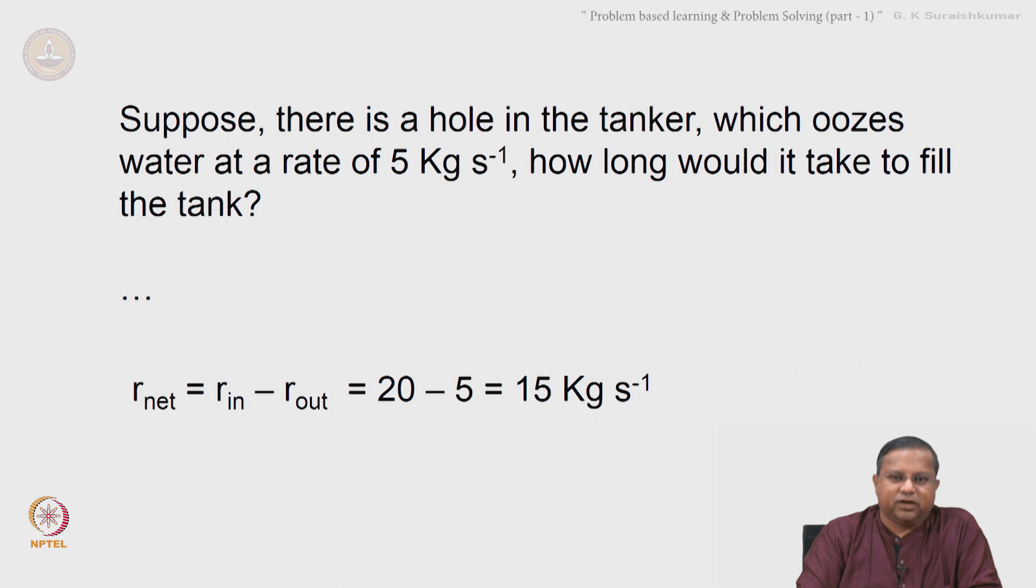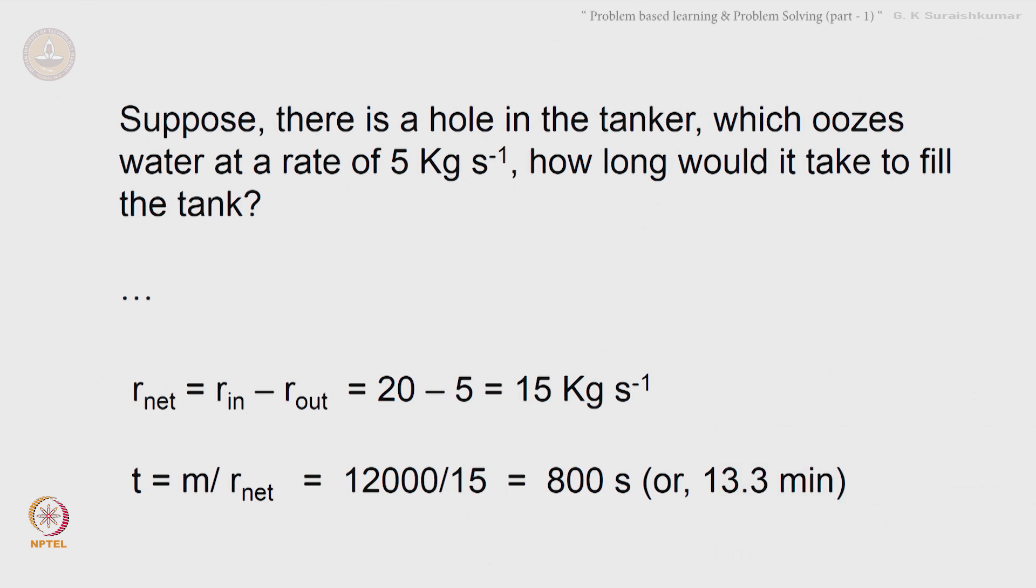Students would be a lot more engaged. But even just stating this and giving the answer immediately—you need to know the net rate to do this. Therefore, net rate is input rate minus output rate. 20 was the input rate, 5 is the output rate here, which is the rate of leak. Therefore, 20 minus 5 is 15 kg per second. And therefore, the time is mass by the net rate, or 800 seconds.